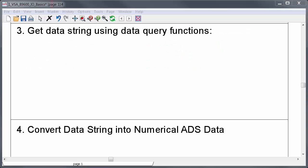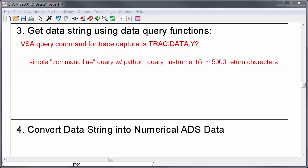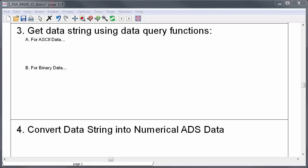Next, let's capture the data trace. After the setup steps, the capture itself is typically done using a single query command. For the VSA, it is trace data y question mark. Data capture can be a little bit tricky. A simple query over the command line like I did earlier is limited to 5,000 characters, which might cut off part of the data. Furthermore, the instrument data format could also vary. So in the setup step, I explicitly set the instrument to ASCII mode, but the instrument could also be configured for binary format. For capturing trace data, there are separate ADS functions for ASCII and binary data types. And these functions will always return as many points as there are.